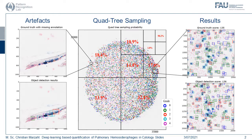This results in very good scores. We achieve a ground-true score from 125 and an object detection score from 136. As you can see here, our cells are identified correctly and look very promising.